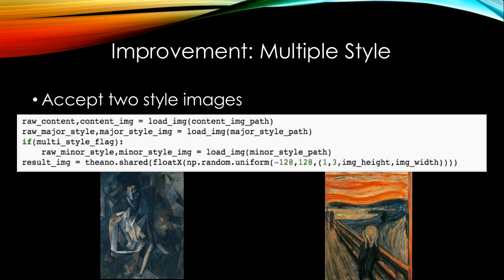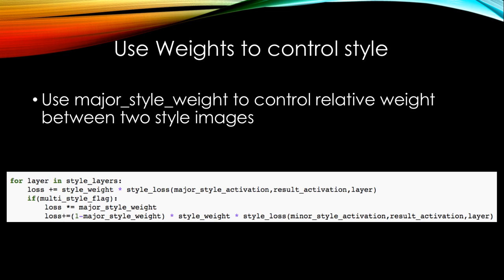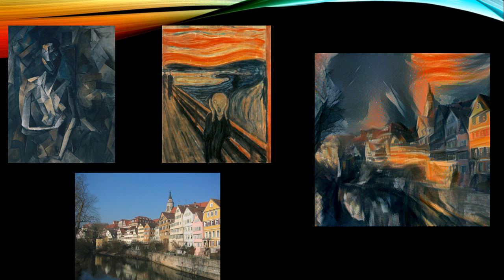Now let's see how we can add multiple style images at one time. We add a minor style image as the second style image, and add a new weight to control the emphasis on one specific style image. Note that the weights of the two style images should add up to one. Also, we can crop a part of the image — say half of the image — chain it with one style, and chain the other half with another style, then add them together. This should also form a multi-style image, giving us the effect of a multi-style result using both methods.